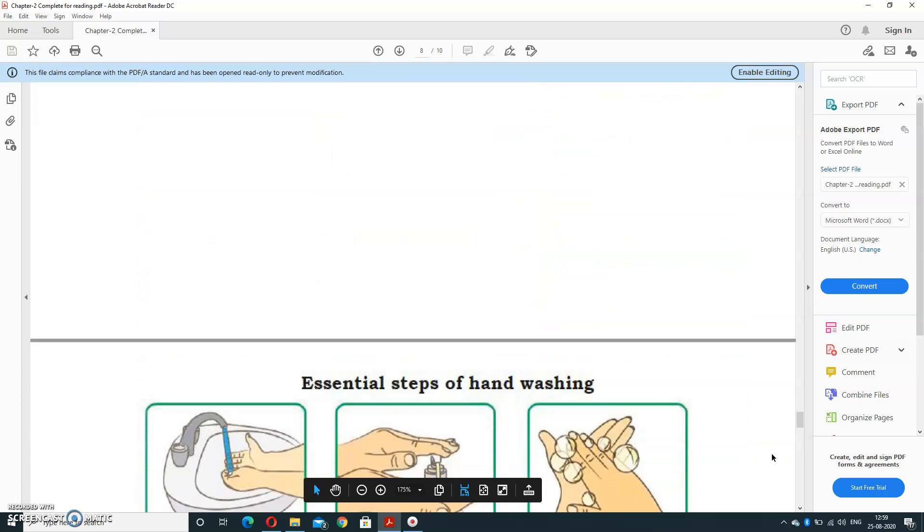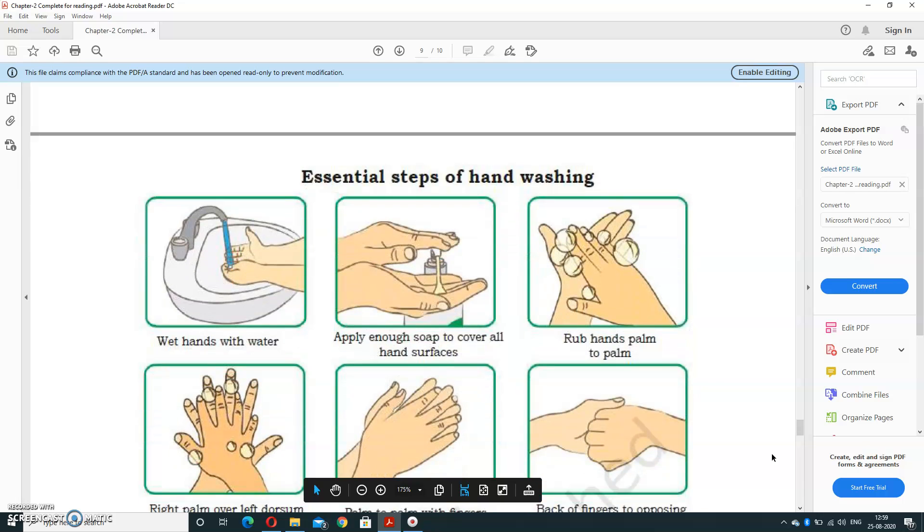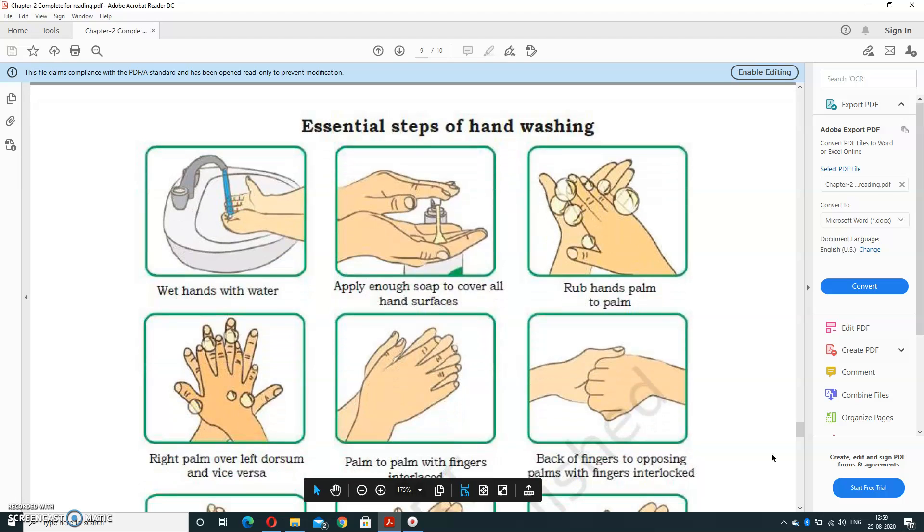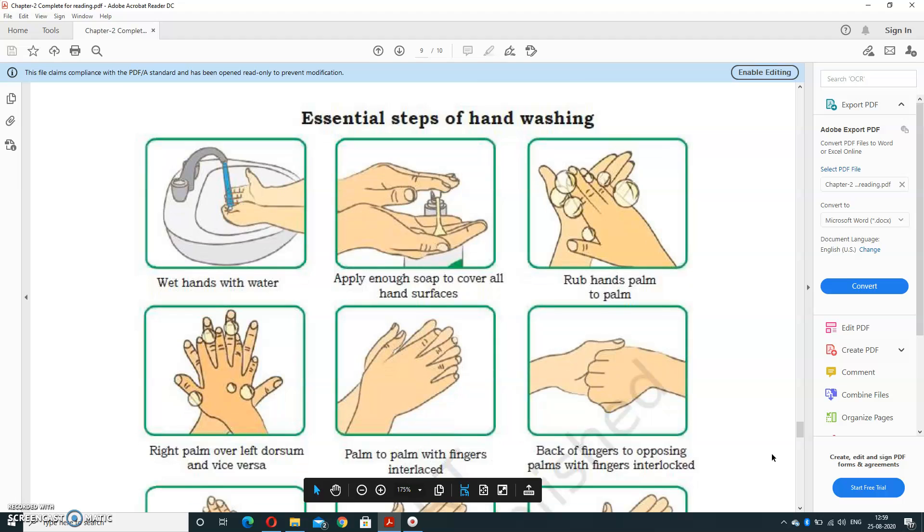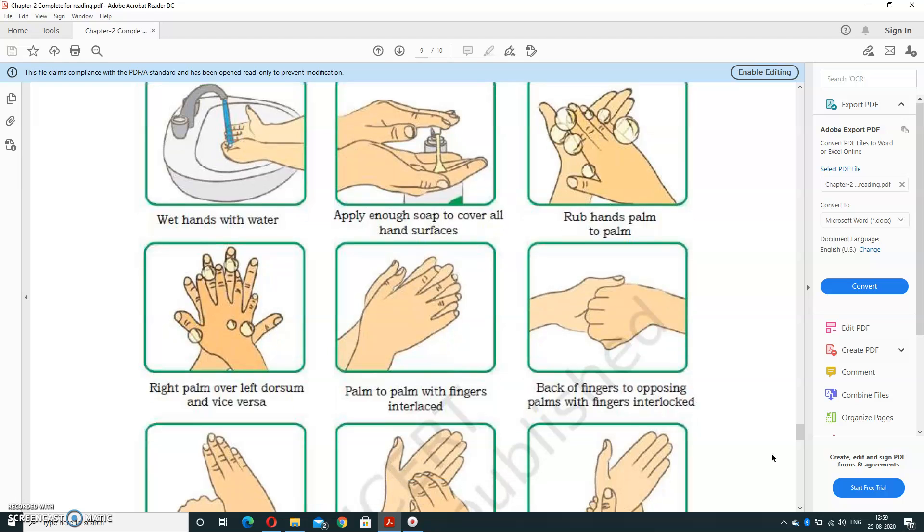Here are some essential steps for handwashing. Wet hands with water, afterward apply soap to cover all your hand surface. Rub hands palm to palm, right palm over left dorsum and vice versa, and palm to palm with fingers interlaced.